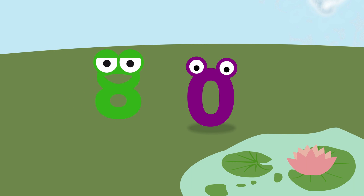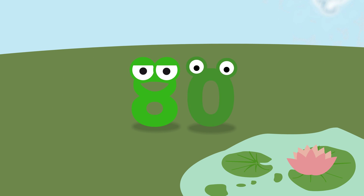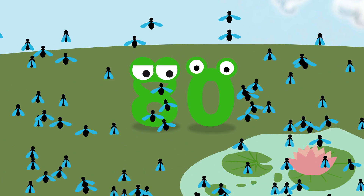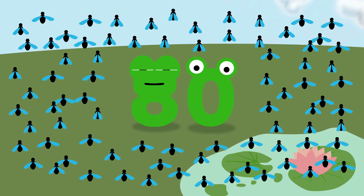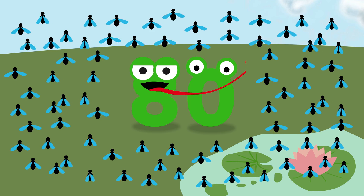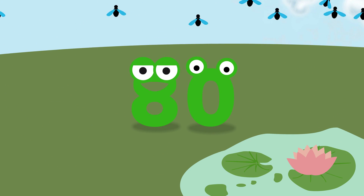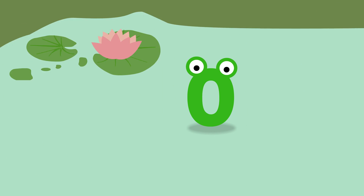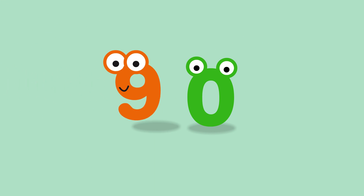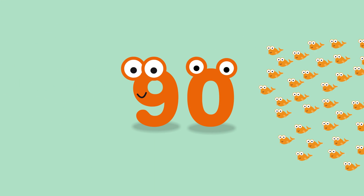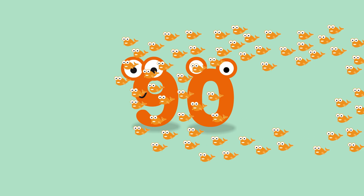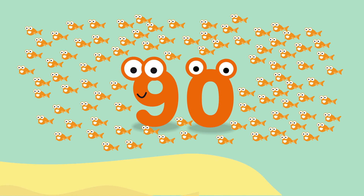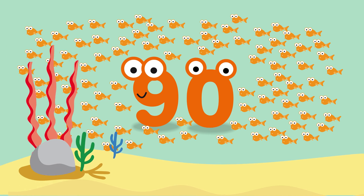If we write number eight in front of zero, we create number eighty! Eighty little flies! Now the frog is sure to catch at least one! Oops! She hasn't! Never mind, she'll get it next time! And what number do we get if we put number nine in front of zero? We write number ninety! Ninety little fish! That's a really big school of fish!